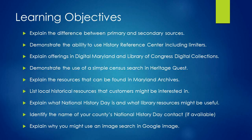Our objectives in this module are to explain the difference between primary and secondary sources, demonstrate the ability to use History Resource Center including limiters, explain offerings in Digital Maryland and Library of Congress digital collections, demonstrate the use of a simple census search in HeritageQuest, explain the resources that can be found in Maryland archives, list local historical resources that customers might be interested in, explain what National History Day is and what library resources might be useful, identify the name of your county's National History Day contact if available, and explain why you might use an image search in Google Images.